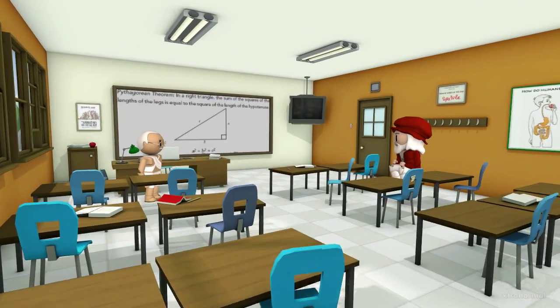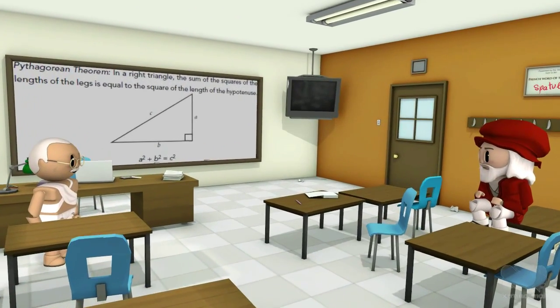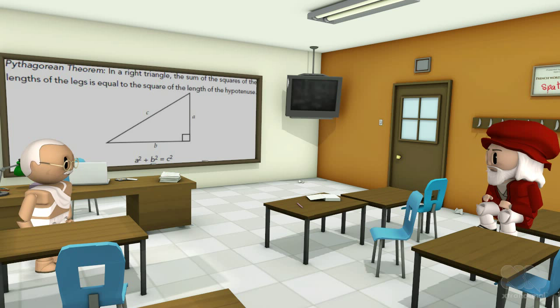I am Pythagoras of Samos, the first man to prove that the square of the hypotenuse of a right-angled triangle is equal to the sum of the squares of the triangle's legs.